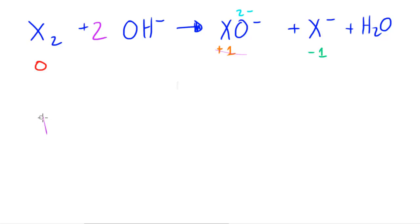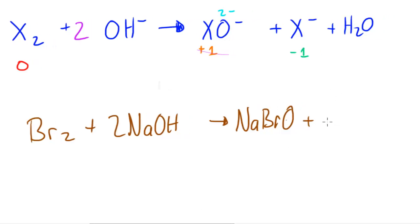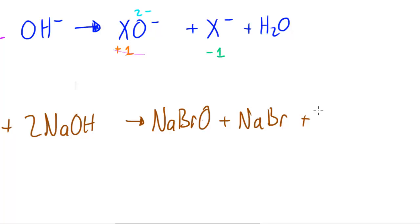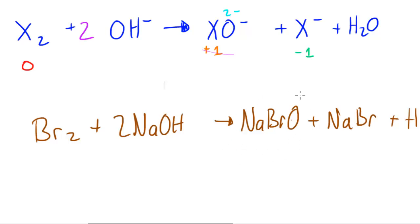Let me draw out Br2 and I'm going to use brown for this. So I've got Br2 and that reacts with the 2 NaOH, and that produces the NaBrO, and it produces NaBr which is sodium bromide, and it produces the H2O.